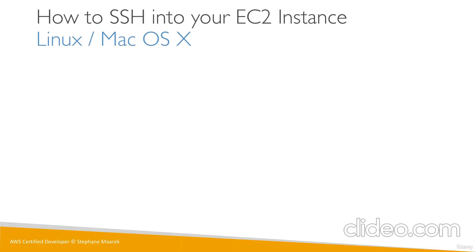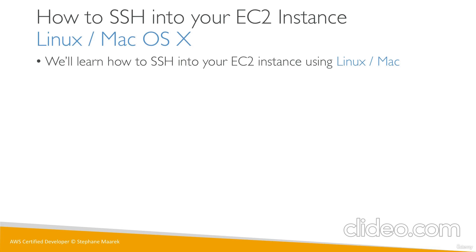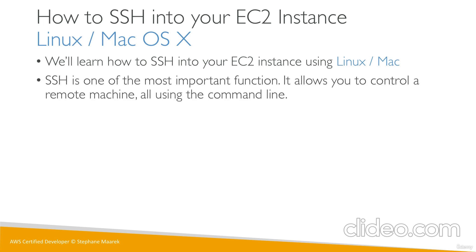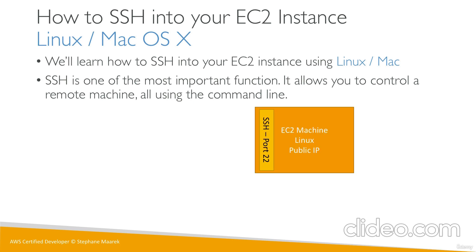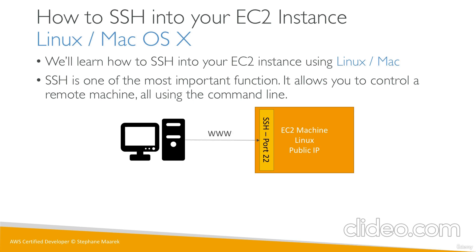Now we're going to SSH into our EC2 instance using Linux or Mac. SSH is one of the most important functions when you deal with Amazon Cloud — it basically allows you to control a remote machine or server using your terminal or command line. We have our EC2 machine running Amazon Linux 2 with a public IP, and a security group allowing port 22 for SSH. Our computer will access the EC2 machine over the web through port 22, and our command line interface will be just as if we were inside that machine.